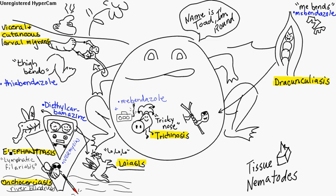You've got lymphatic filariasis, which is also known as elephantiasis. A mosquito transmits infective larvae during the bite. You first usually get your scrotal lymphatics first, and then move from there. Elephantiasis results after repeated inflammatory episodes of the connective tissue.